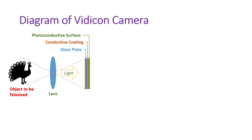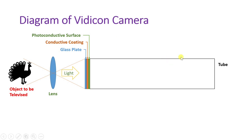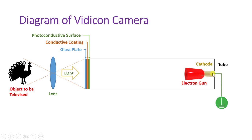There is a photoconductive surface from which the output electrical signal of the Vidicon camera is taken. An electron beam is bombarded onto this photoconductive surface. The complete tube contains an electron gun fed by a cathode. Once supply is applied to the cathode, it emits an electron beam onto the photoconductive surface.